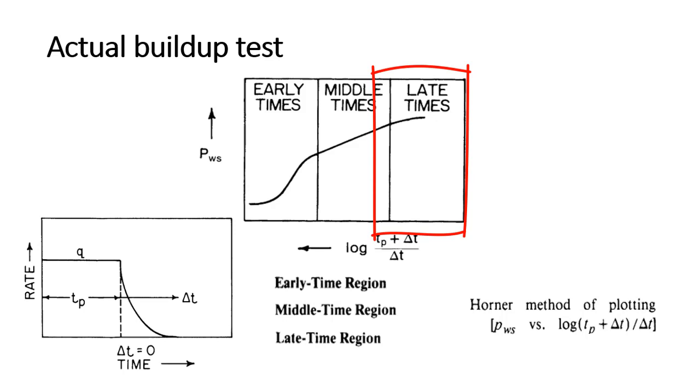The late time region is where fluid flow is somewhere near to the boundary of the reservoir. Because of this boundary effect, the pressure behavior is not like in the middle of the reservoir, and because of that, some distortion in the data is there.